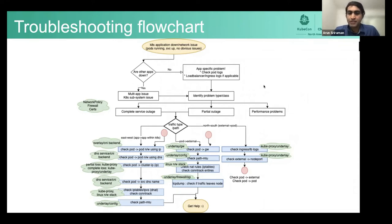The second one is north-south and north-south again can be divided into two, which is pod to external, which means that the pod is trying to reach an object store or a database server running outside Kubernetes or just, for example, if it's running in cloud, it could be RDS.